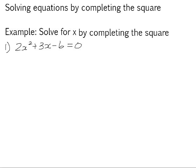So for example, solve for x by completing the square. We need to create a perfect square trinomial. This expression on the left hand side is already a trinomial, but the negative 6 on the right hand side does not complete the square. This trinomial currently does not factorize into a perfect square binomial.